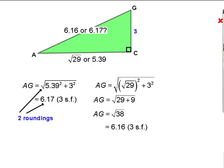Well, think about it. We've rounded on the left twice to get that answer. First to get 5.39 and second to get 6.17. So there are two roundings there.